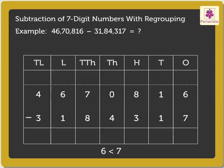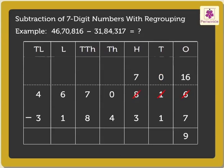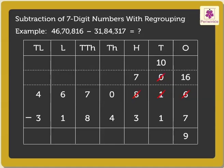As 6 is smaller than 7, regroup the 1 ten-thousand as 0 ten-thousands and 16 thousands. Therefore, 16 minus 7 is equal to 9. Now we have to subtract 1 from 0. As 0 is smaller than 1, we regroup 8 hundreds and 0 tens as 7 hundreds and 10 tens. Therefore, 10 minus 1 is equal to 9.